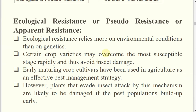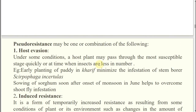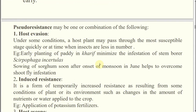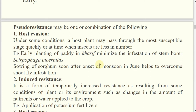Three types of pseudo resistance: first is host evasion, second is induced resistance, and third is host escape. Host evasion means under some conditions a host plant may pass through the most susceptible stage quickly, or at a time when the insects are less in number. For a successful pest infestation, two things must be there: which stage of the insect and which stage of the plant must coincide.